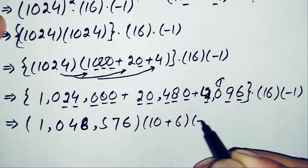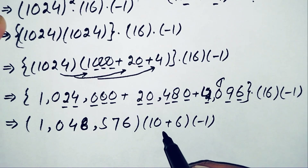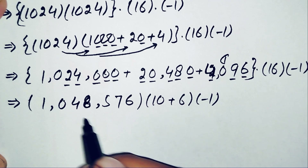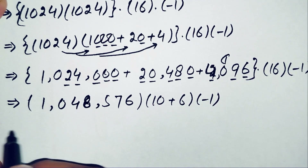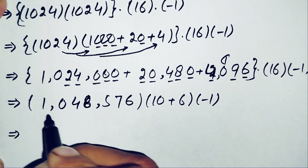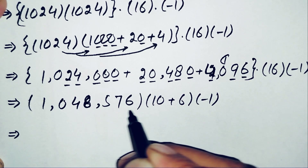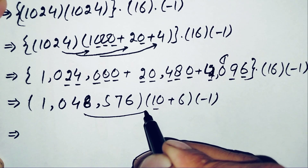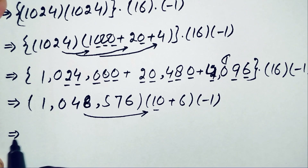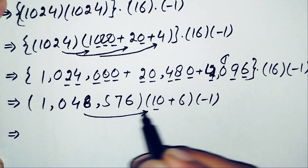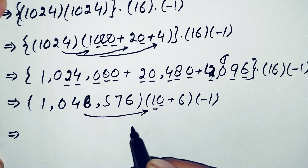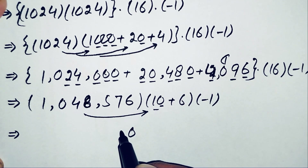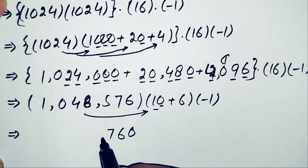We split 16 into 10 plus 6 to make multiplication easier. Multiplying 1,048,576 by 10 simply appends a zero: giving 10,485,760.